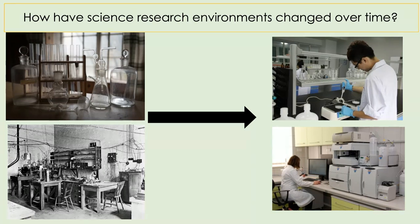Think about how science research environments have changed over time. If you look at the pictures on the left, those are from early experiments over 100 years ago, and on the right are more modern labs. You can see a real difference in the technology — on the left it's very basic, while on the right in modern labs we have much more equipment and much more technology.